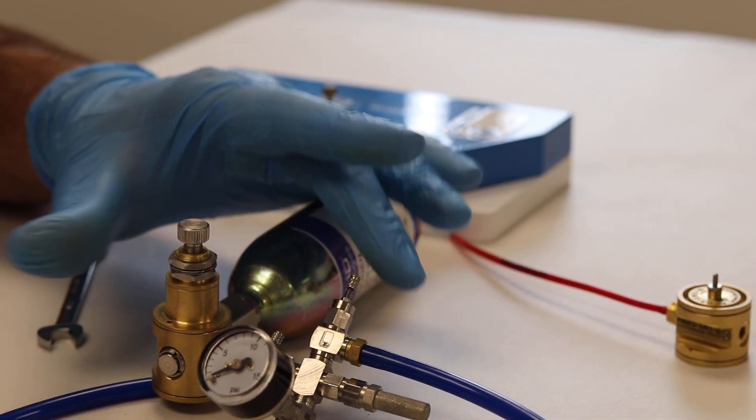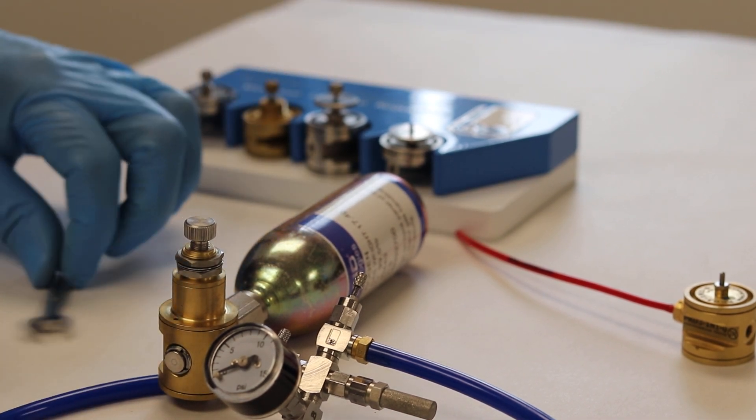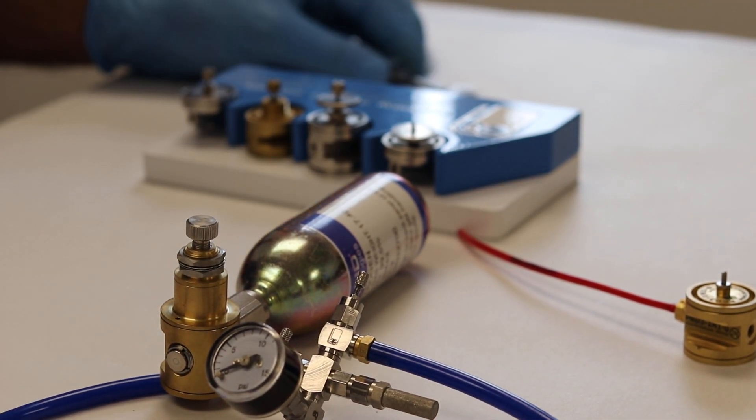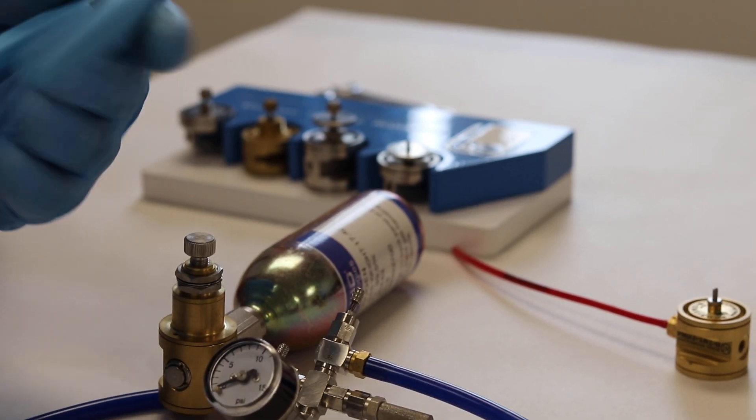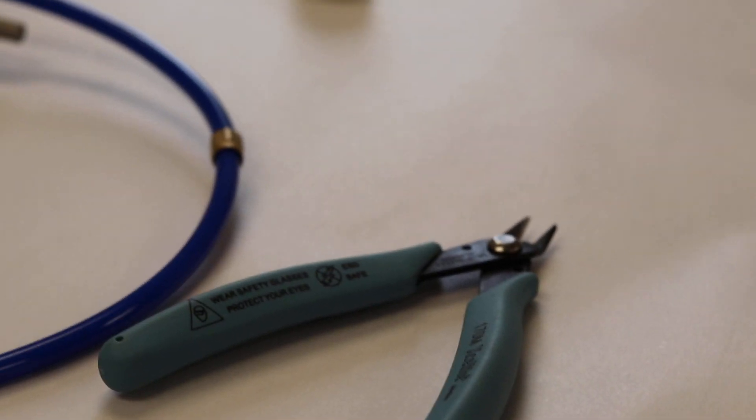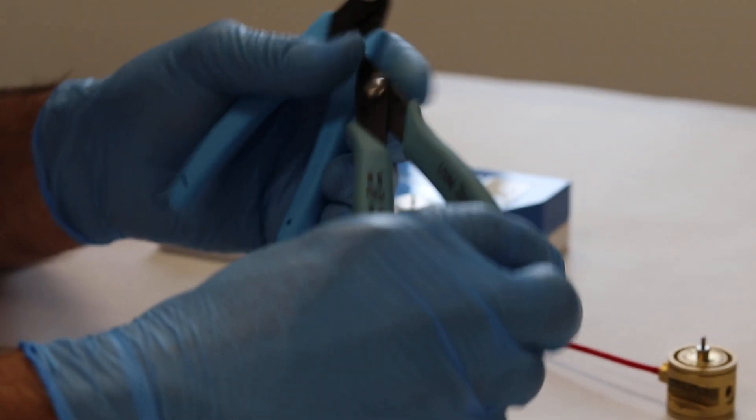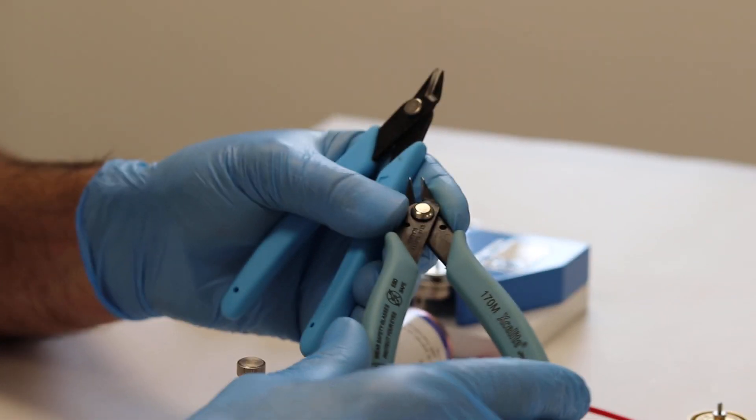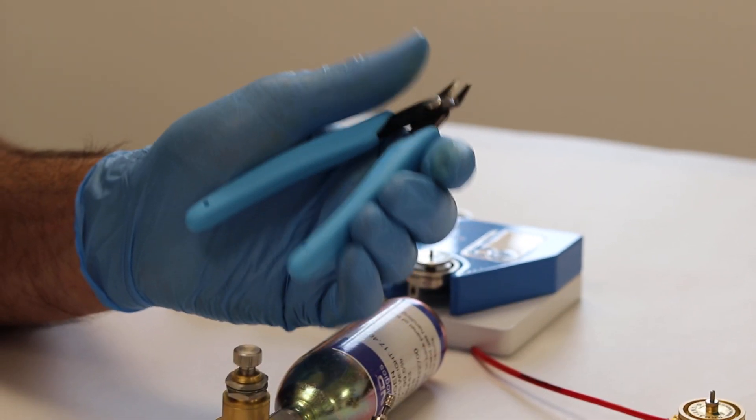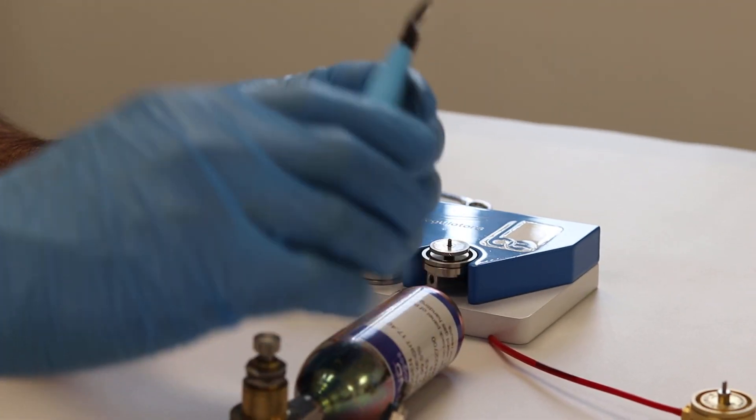But in this case, we're not going to use that method. Another method that we find works pretty well, the idea is to use these. This is a Xuron brand, and this is an Excelite brand cutters. And they're mentioned in our technical paper. And this one here is an Excelite model 170M. This is a Xuron, I don't have the model number here, but it is in our white paper.